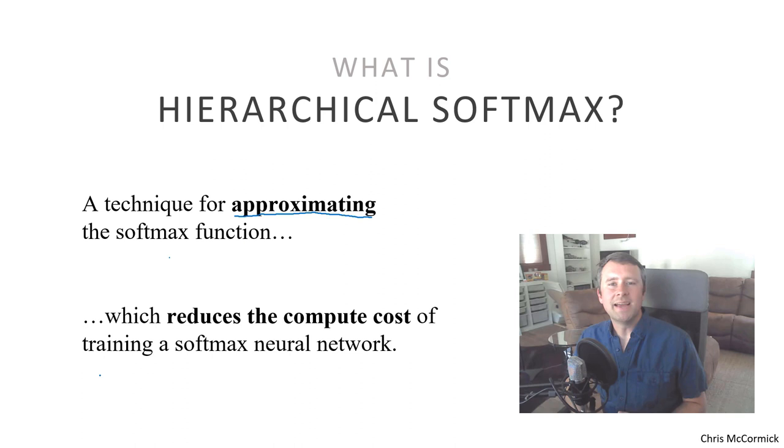So hierarchical softmax is a technique for approximating the softmax function. And what that means is that your model will still learn the softmax behavior, and you can still get those softmax values out of it if you want them. But it implements it in a way that greatly reduces the compute cost of training your neural network. Now, before we get into the explanation of how hierarchical softmax is implemented, let's do a quick refresh on what the softmax function is and why it causes such a compute problem for us with the Word2Vec model.